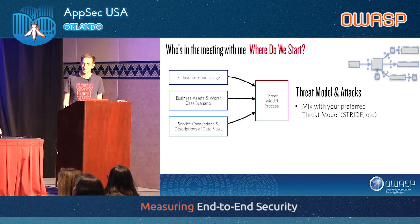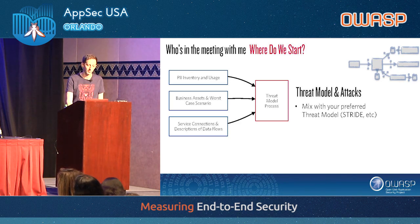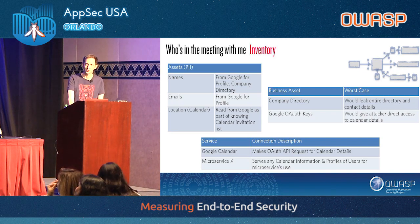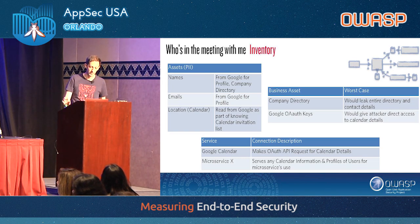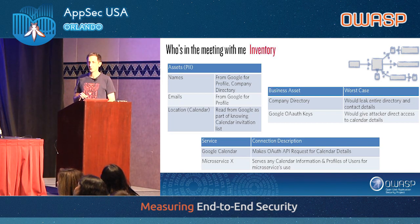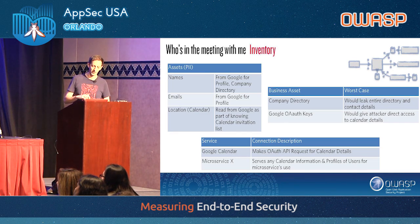Threat models, unlike whiskey, can be blended and you shouldn't feel bad — use whatever works for your organization: STRIDE, attack trees. The important part is what comes out is a series of attacks we'll work with. The assets will be our PII: names, emails, and location from calendar information. Business assets are the company directory and Google Auth keys, and we come up with worst-case scenarios for those. Then we talk about the different services we connect to — Google Calendar and the microservice that talks to us.